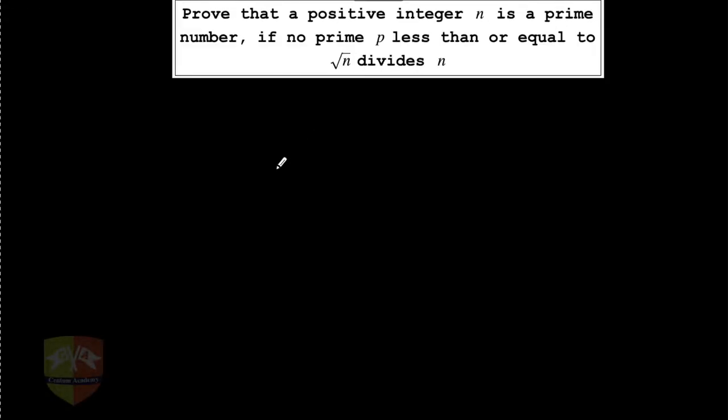Hello friends, welcome again to yet another session on problem solving on real numbers. In this question, the question reads: prove that a positive integer n is a prime number if no prime p less than or equal to root n divides n.